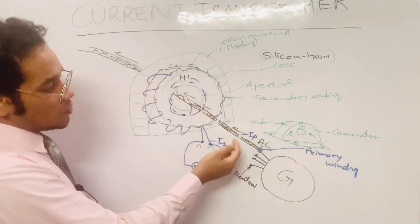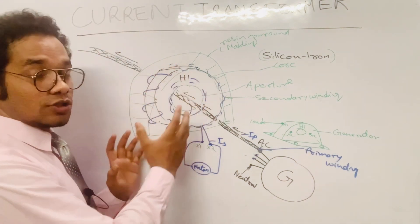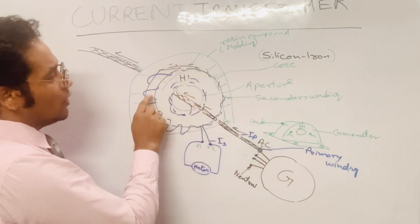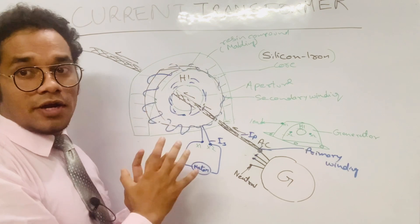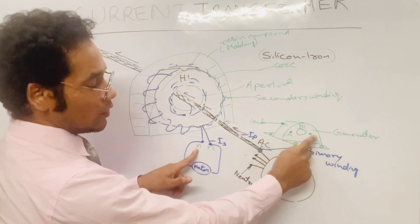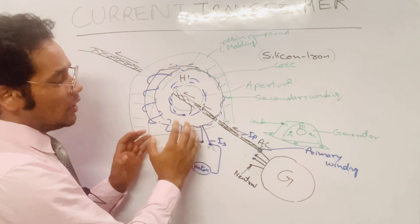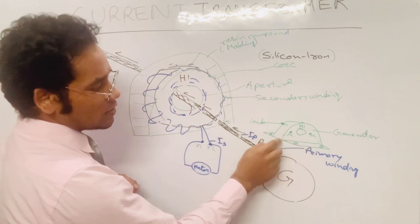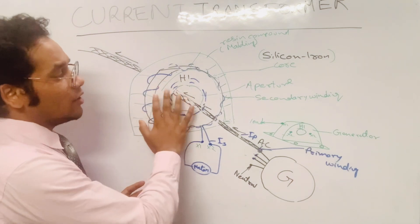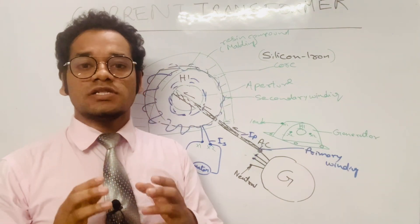To summarize: the current transformer is a device which can sense current for control, protection, and indication applications. Its construction consists of a toroidal-shape core made of silicon iron. On that core are the secondary windings — the current transformer consists only of secondary windings. The terminals X1 and X2 are used for output. The core and windings are enclosed within a casing or molding made of resin compound, placed on a metal base plate for mounting in the structure.